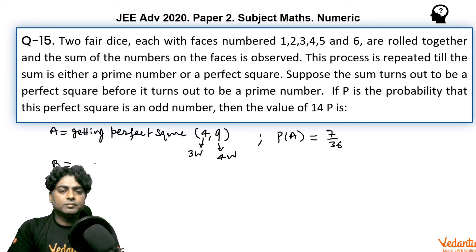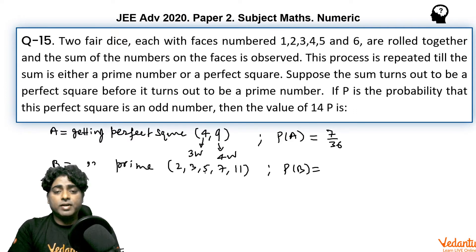Event B: getting prime. So what are the possibilities for prime? 2, 3, 5, 7 or 11. And probability of getting prime would be: for 2 there is 1 way, for 3 there are 2 ways, for 5 there are 4 ways. 1, 4, 4, 1, 2, 3, 3, 2. For 7 there are 6 ways, for 11 there are 2 ways. In that way you will see that it would be 15 upon 36.